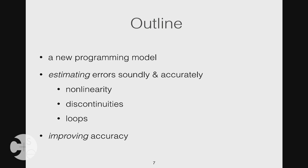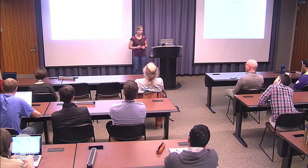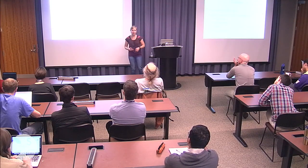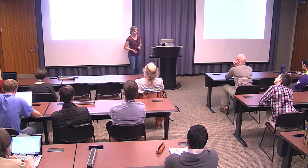Here's a quick outline of the talk. I'll first present a new programming model, then go into technical details about how we actually compute and bound numerical errors. At the end, I'll briefly talk about how we even try to improve accuracy — so we first lower accuracy by choosing small data types, and then also try to improve it.